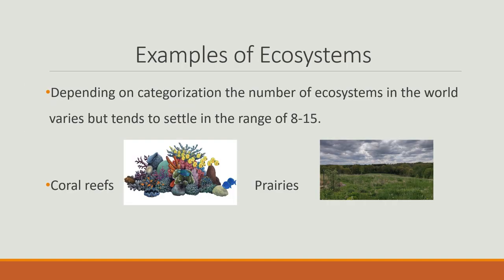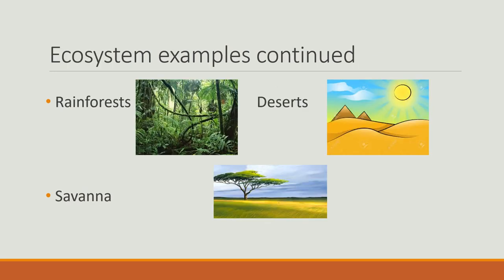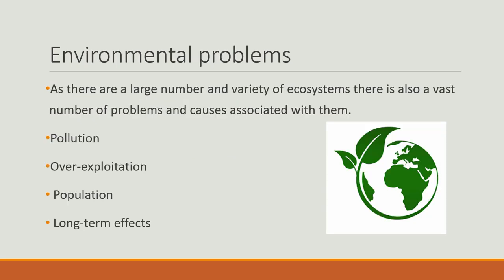Depending on categorization, the number of ecosystems in the world varies, but it tends to settle in the range of 8 to 15. Some examples are coral reefs, prairies, rainforests, deserts, and savannas.